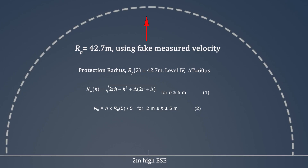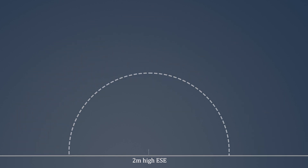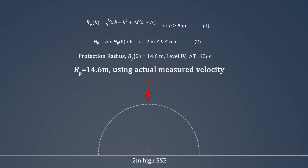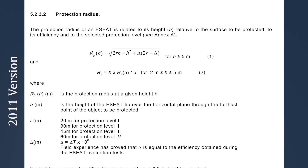If you use the actual average measured leader velocity, the claimed enhanced protection radius of an ESE virtually disappears. In the 2011 version of the standard, although the same value appears in the same equation to produce the exact same claimed enhanced protection radius, there is no longer any reference to a leader velocity or any claimed method of operation.